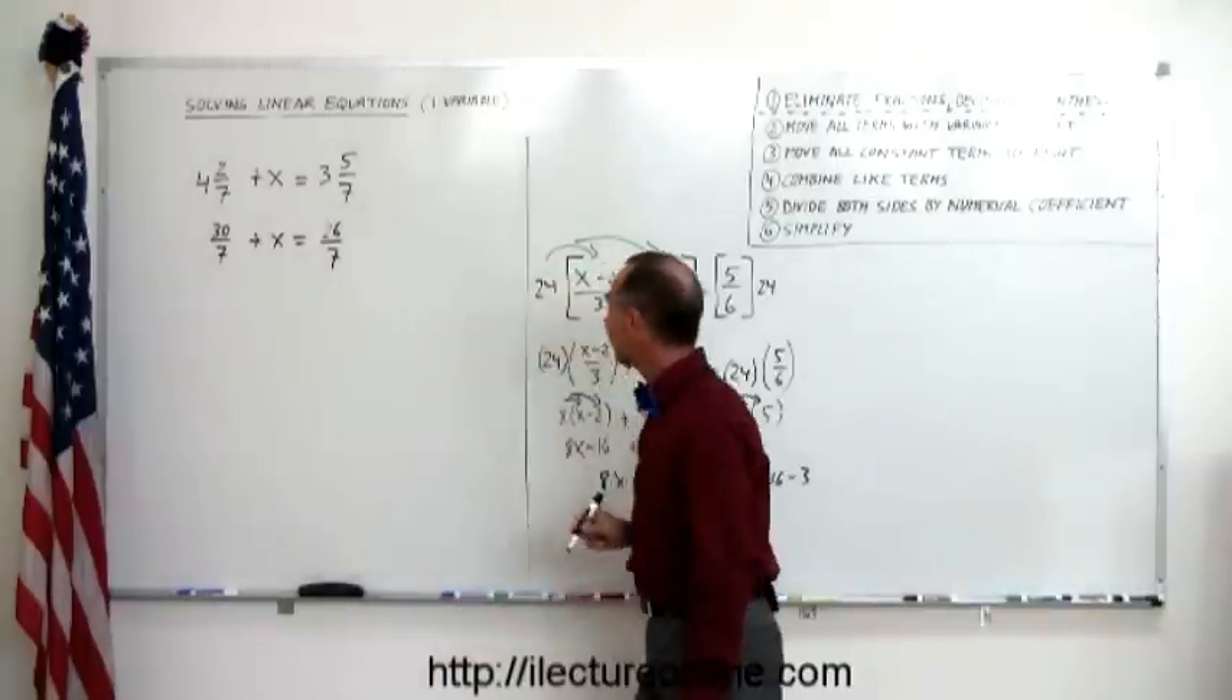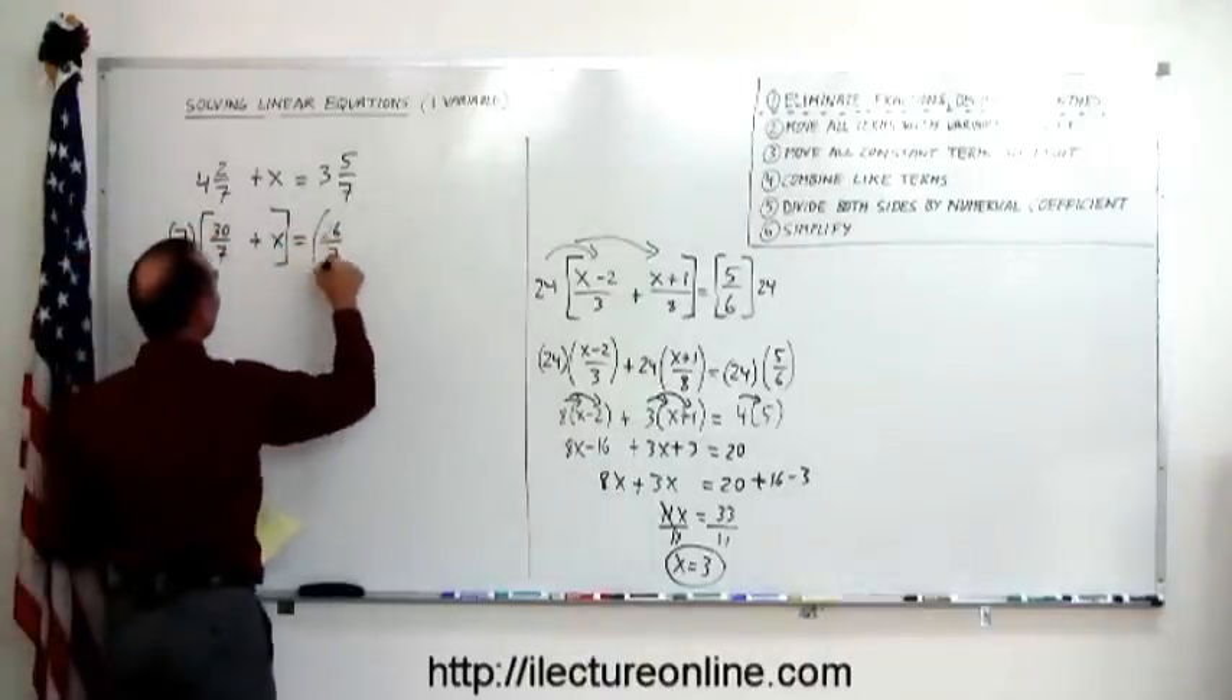And now we have something like we had before, and that's easily solved by following the rules. The first thing is, get rid of these fractions, eliminate fractions. Again, what is the rule? We multiply both sides of the equation by the lowest common denominator. Well, the lowest common denominator is 7, so we multiply the left side by 7 and we multiply the right side by 7.